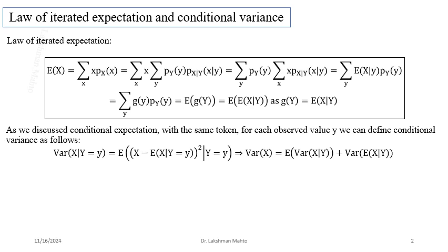You will see this approach here in the proof of the Law of Variance. You had already seen the proof of the Law of Iterated Expectation: you started with expectation as per definition — a weighted sum of x — then expressed p(x) as a marginalized form from the joint probability mass function, and the joint PMF was written using the multiplication rule as p(y) · p(x|y).